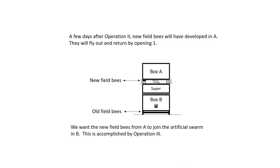A few days after operation two, new field bees will have developed in A. They will fly out and return by opening one. We want the new field bees from A to join the artificial swarm in B. This is accomplished by operation three.